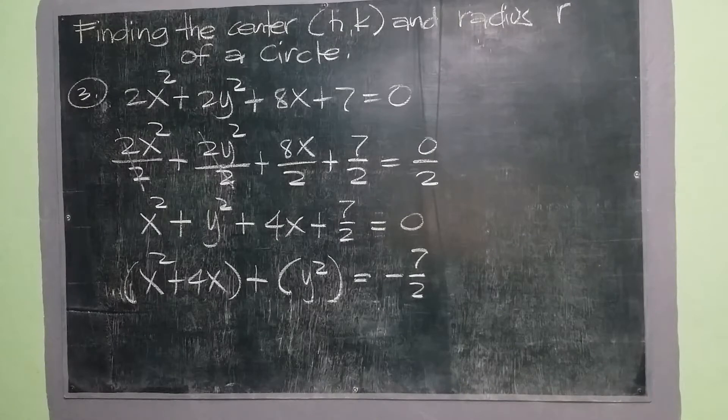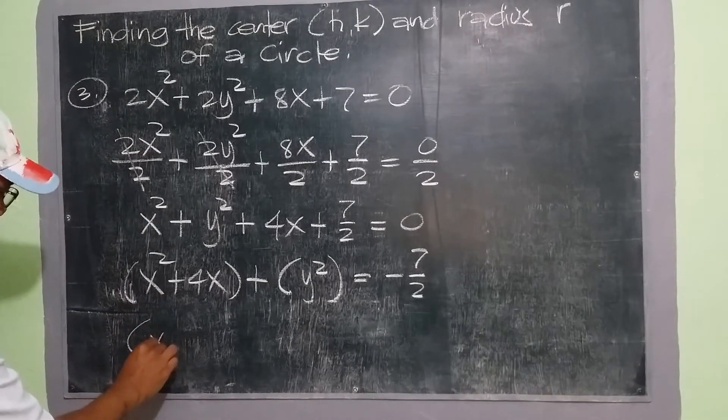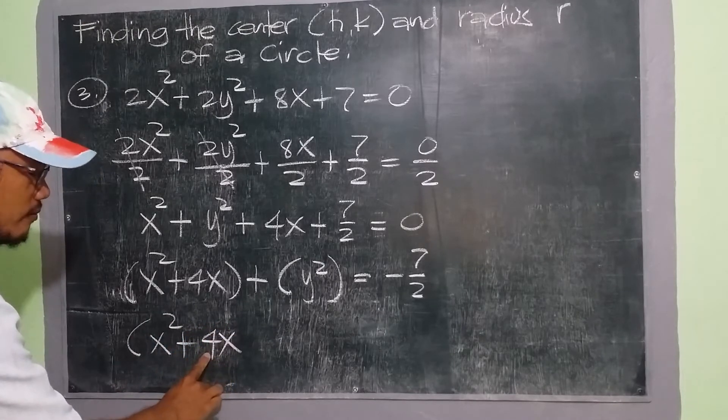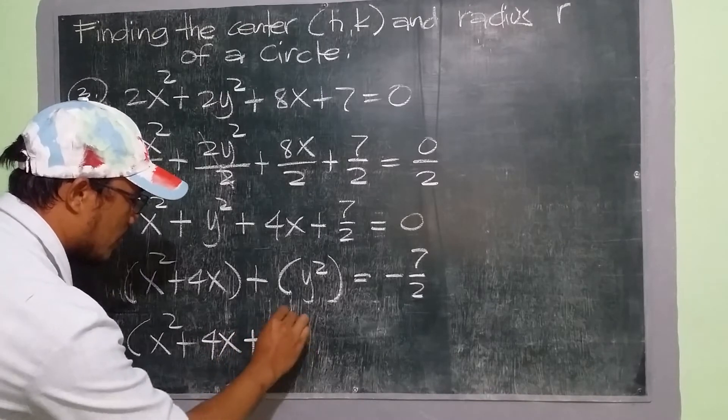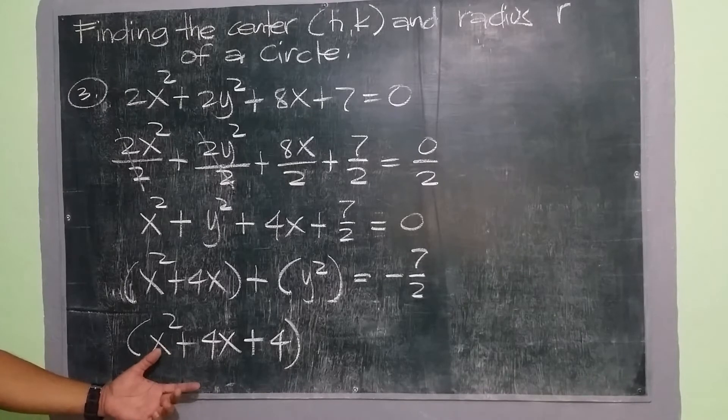Next, our step is to complete the square. So we have x squared plus 4x. 4 divided by 2 is 2, 2 times 2 is 4. So we're going to add 4 to complete our square. So this, to complete this perfect square.